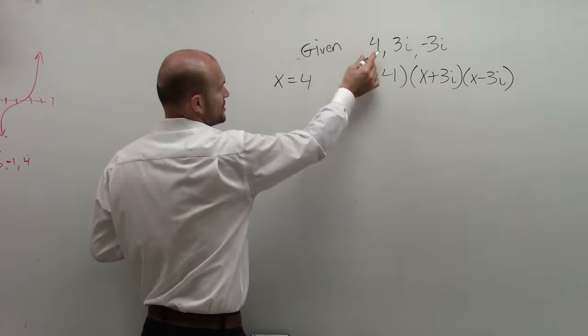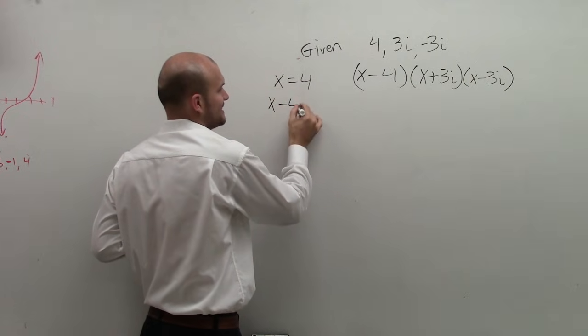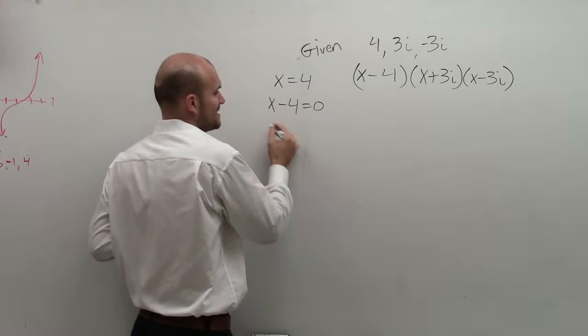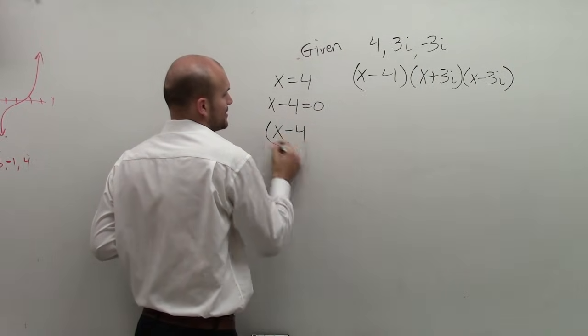Well, remember, if that's my zero, that means the x intercept equals 4. So I set that equal to 0. So I subtract the 4 on the other side, so I get x minus 4, meaning that's my factor. OK?